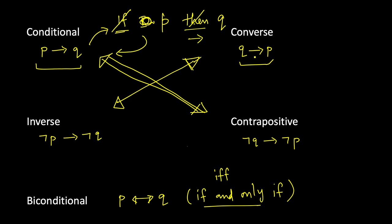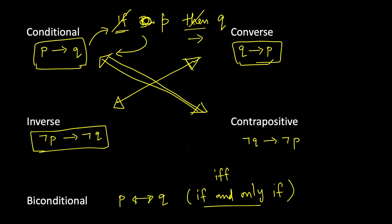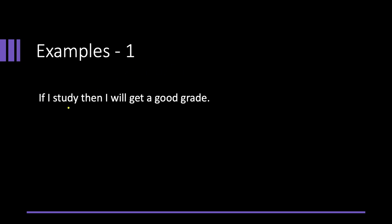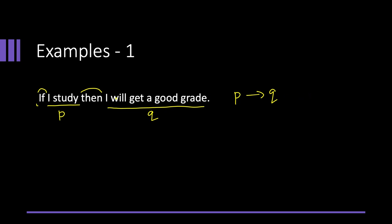Let's look at a practical example. Given the English sentence: 'If I study, then I will get a good grade.' Two statements are being combined: P is 'I study' and Q is 'I will get a good grade.' The 'if' and 'then' are present, so this is written as P implies Q — the original conditional statement.